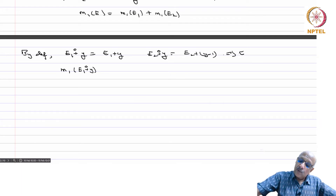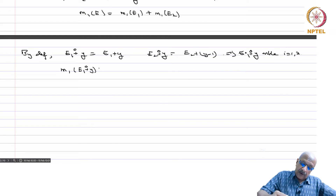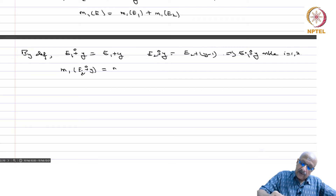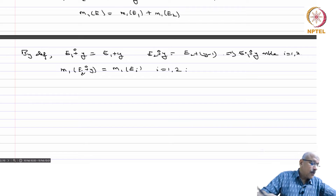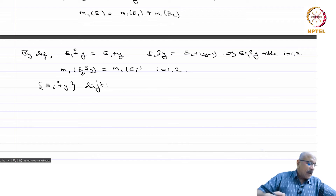This implies that E_i plus y are measurable for i=1,2, and m1 of E_i plus y equals m1 of E_i for i=1,2. Now, E1 plus y and E2 plus y are disjoint: if not, there exist a,b in [0,1) such that a+y equals b+y-1, implying |b-a| equals 1, which is impossible since a and b are strictly less than 1.